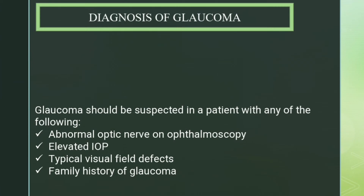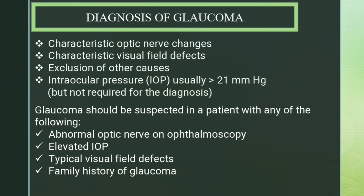For diagnosis of glaucoma, you need: characteristic optic nerve damage or changes, characteristic visual field defects, exclusion of other causes, and intraocular pressure usually more than 21 mmHg — though this is not required for diagnosis. Glaucoma should be suspected in patients with any of the following: abnormal optic nerve on ophthalmoscopy, elevated intraocular pressure, typical visual field defects, or family history of glaucoma.